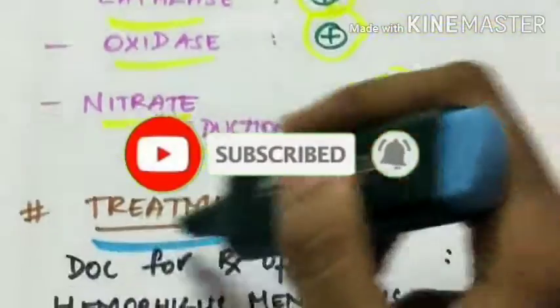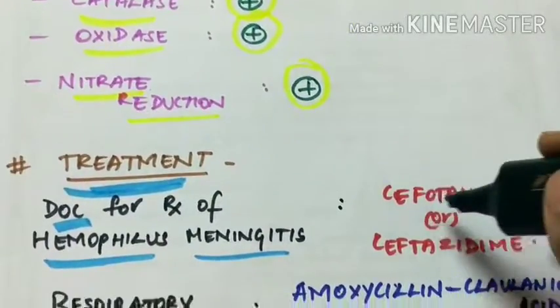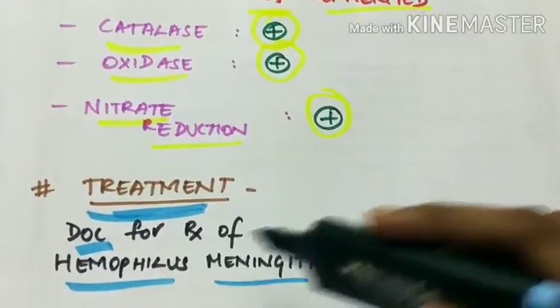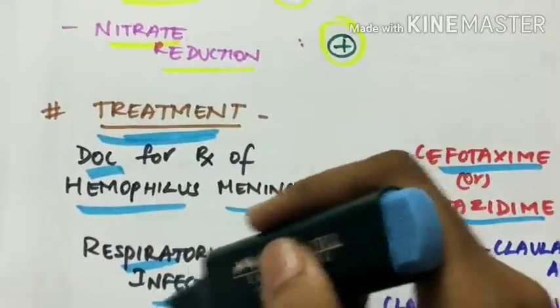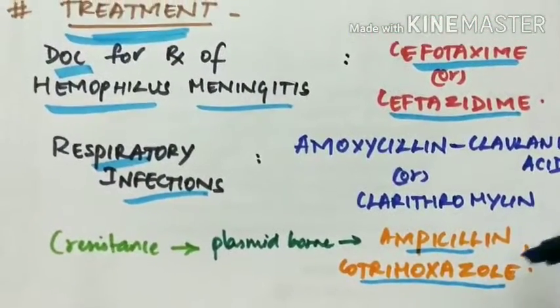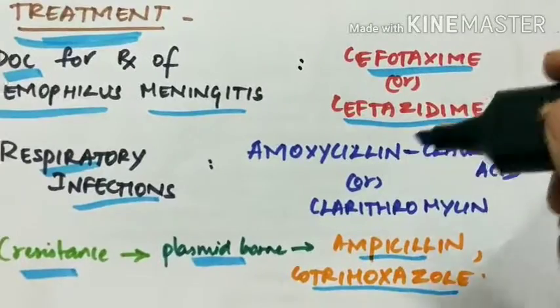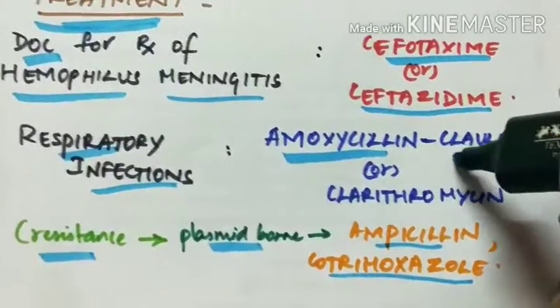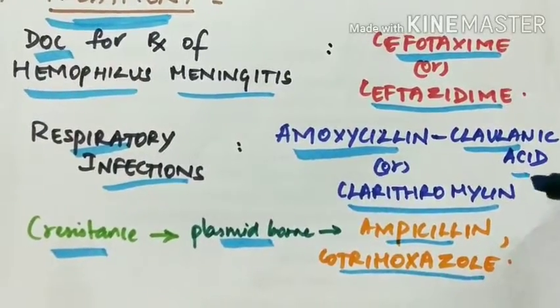The treatment. Drug of choice for the treatment of Haemophilus meningitis is Cephotaxime or Ceftazidim. For respiratory infections, initially ampicillin and cotrimoxazole were used but later plasmid bond resistance has developed against them. So now the drug of choice for respiratory infections caused by Haemophilus influenzae are Amoxicillin, Chiavulanic acid combination or Clarithromycin.